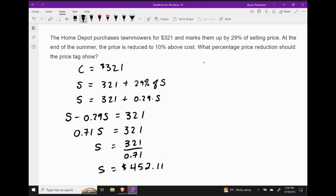Now the next thing we need to do is we need to determine what the reduced selling price is going to be. Now our reduced selling price is going to be 10% above the cost price. So our reduced selling price can be found by taking the cost price and adding to that cost price 10% of the cost.